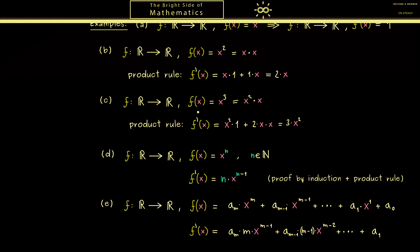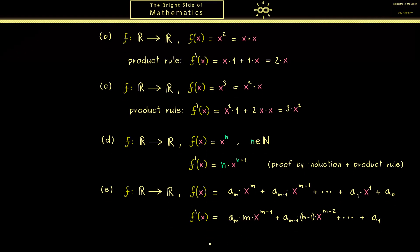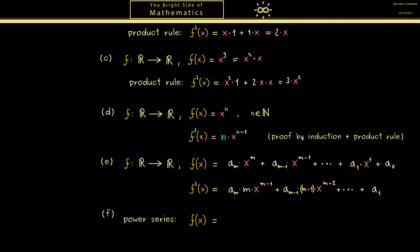Now we have many examples where we immediately know the derivative. A natural question is: can we generalize this formula even more? Specifically, are we able to calculate the derivative of a power series, which is roughly speaking just an infinite polynomial? Maybe we can do the same as before: put the power k in front times x to the power k minus 1, and since the constant term a0 vanishes, start the series at 1. However, this is not clear at all because this is not a finite sum — there is a limit process here and the sum rule does not apply.